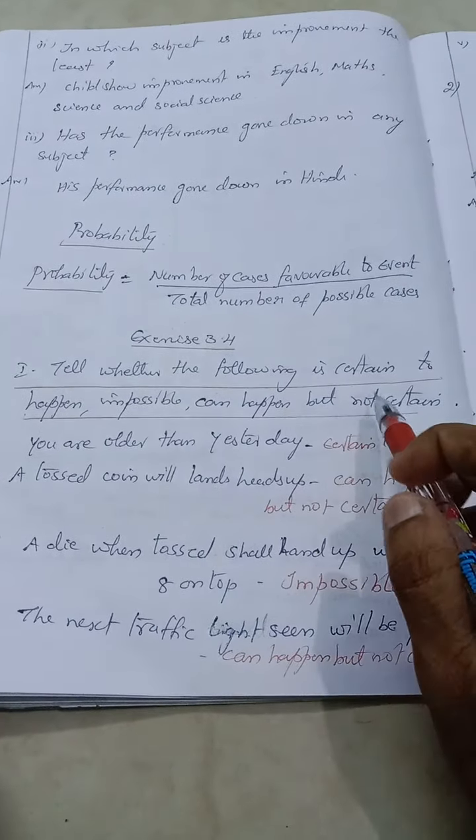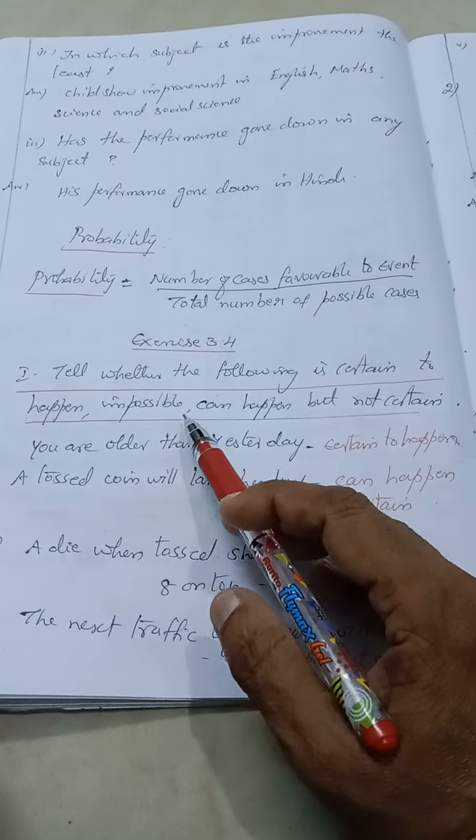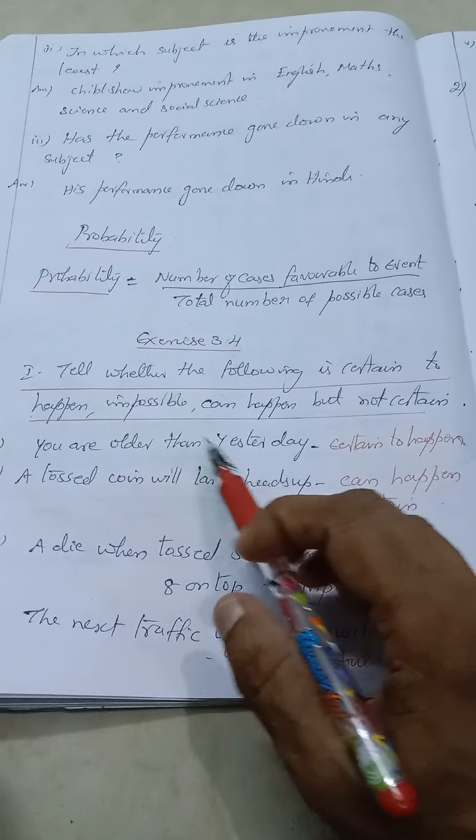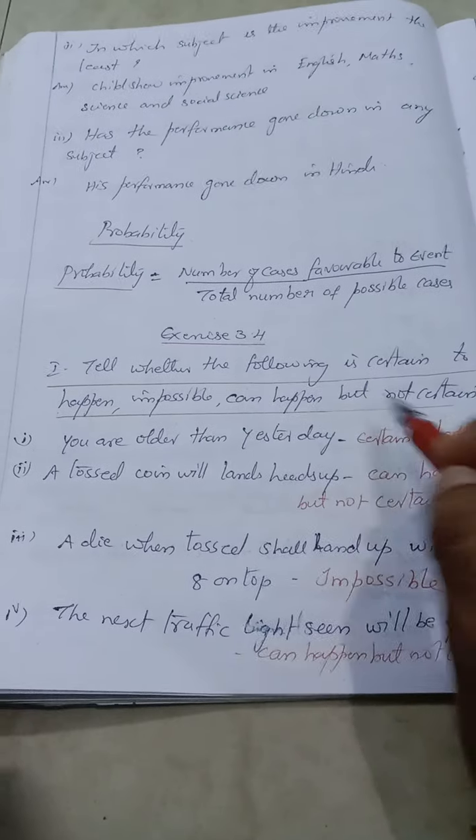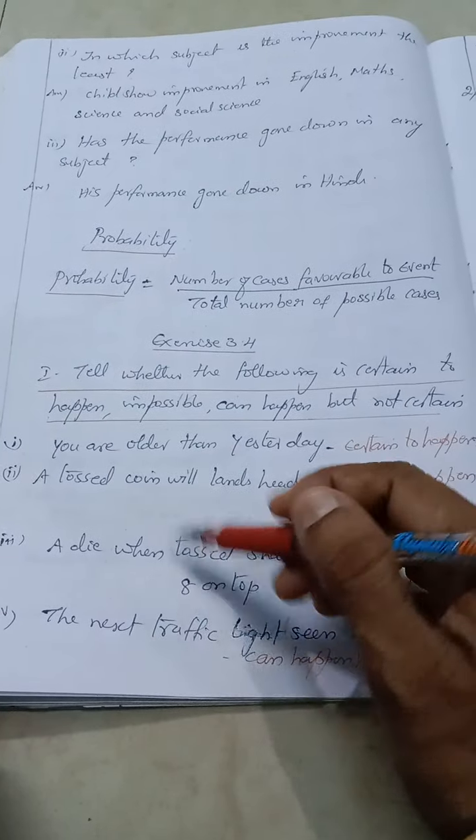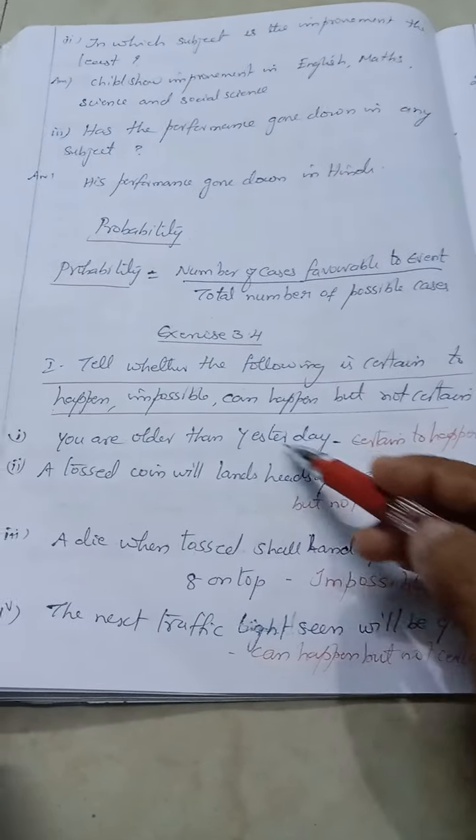Now let us come to this exercise. First question, first roman number, they are asking: tell whether the following is certain to happen, impossible, or can happen but not certain. What is certain to happen? Surely it will happen. Impossible means it will never happen. Can happen but not certain means sometimes it may happen or sometimes it may not.